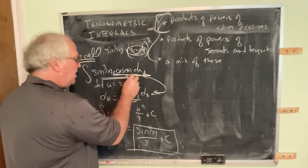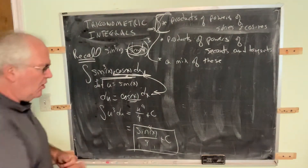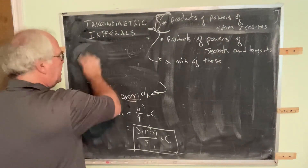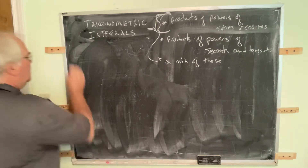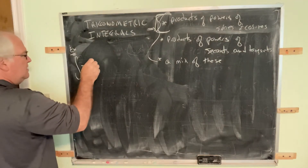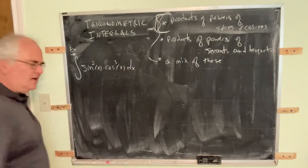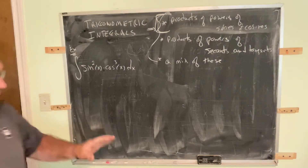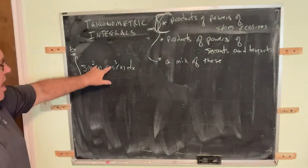What we're going to do is leverage our knowledge of how this works for more complicated cases. Our next example is the newer version: suppose we want the integral of sine squared of x times cosine to the third of x dx. This is the product of powers — products of powers of sines and cosines.